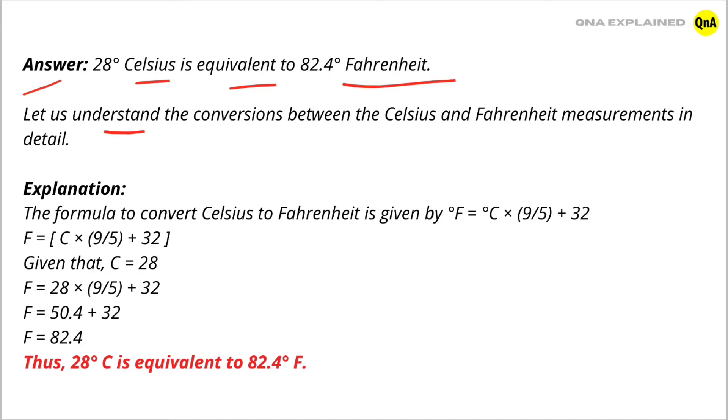Let's understand the conversions between the Celsius and Fahrenheit measurements in detail. Explanation: The formula to convert Celsius to Fahrenheit is given by F = C × (9/5)